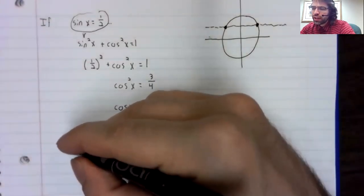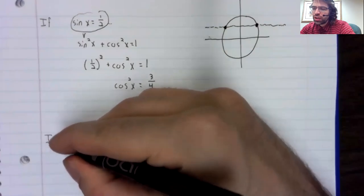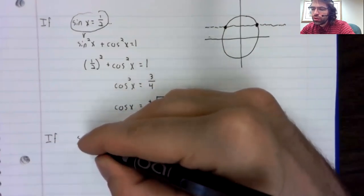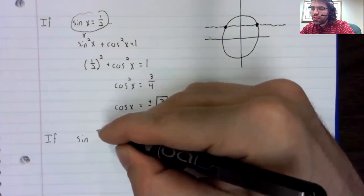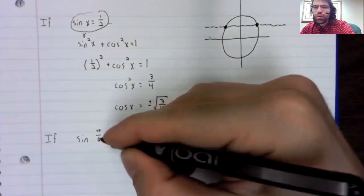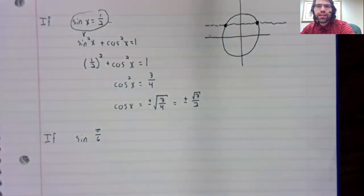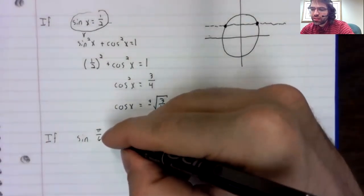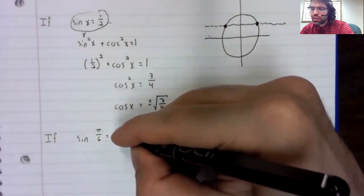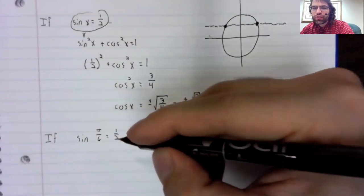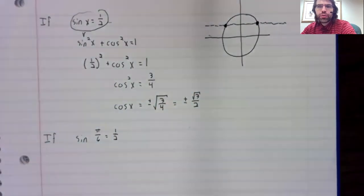On the other hand, suppose I tell you that the sine of pi divided by six is one half. And I ask for information about the cosine.